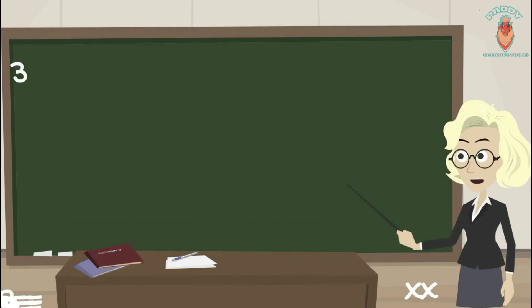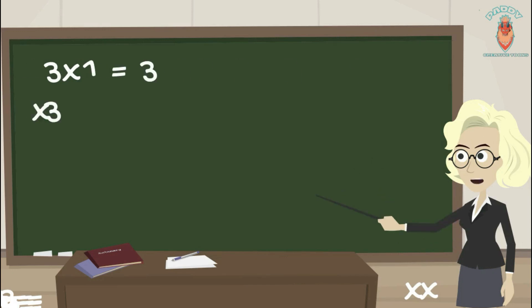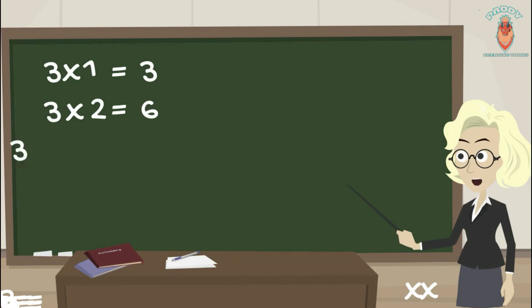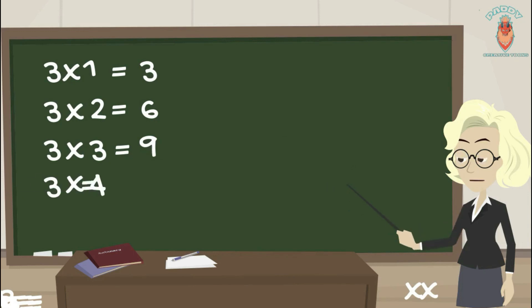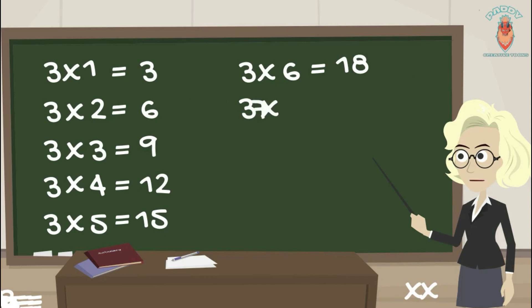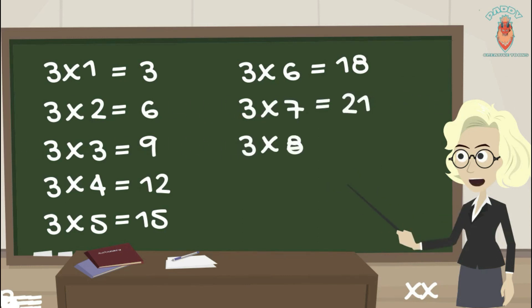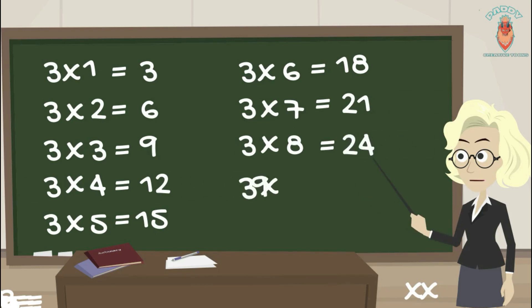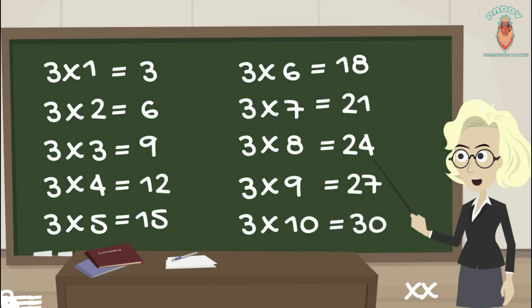3 1s are 3, 3 2s are 6, 3 3s are 9, 3 4s are 12, 3 5s are 15, 3 6s are 18, 3 7s are 21, 3 8s are 24, 3 9s are 27, 3 10s are 30.